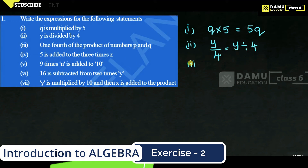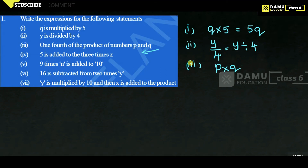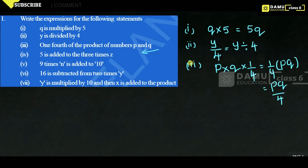The third statement is: one fourth of the product of numbers p and q. When writing the expression, work from right to left. The product of p and q is p×q. One fourth of that means multiplied by 1/4, giving us pq/4.